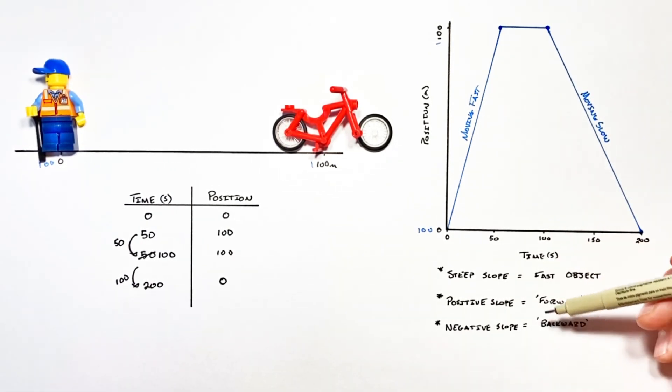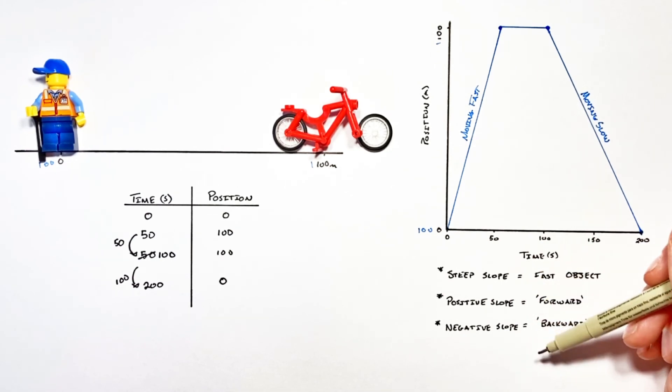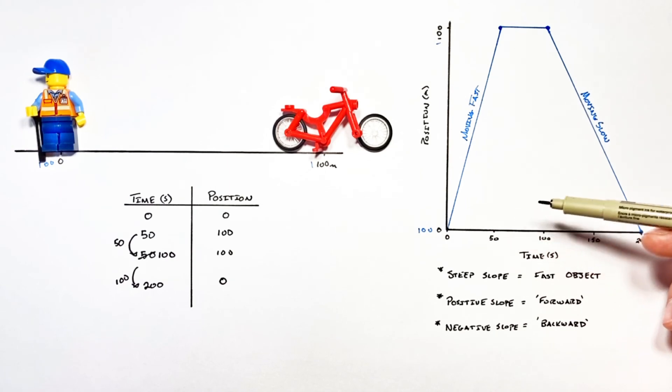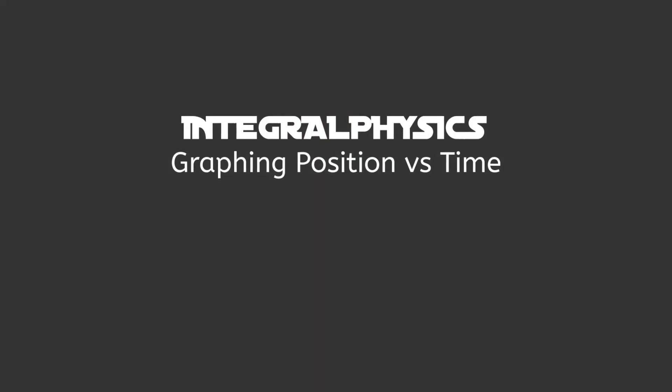Now in the future we're going to take a deeper look at things like slope and even area under these curves in order to look at concepts like velocity and acceleration. But this has been how to graph the position versus time of an object and on that note that's all for now.